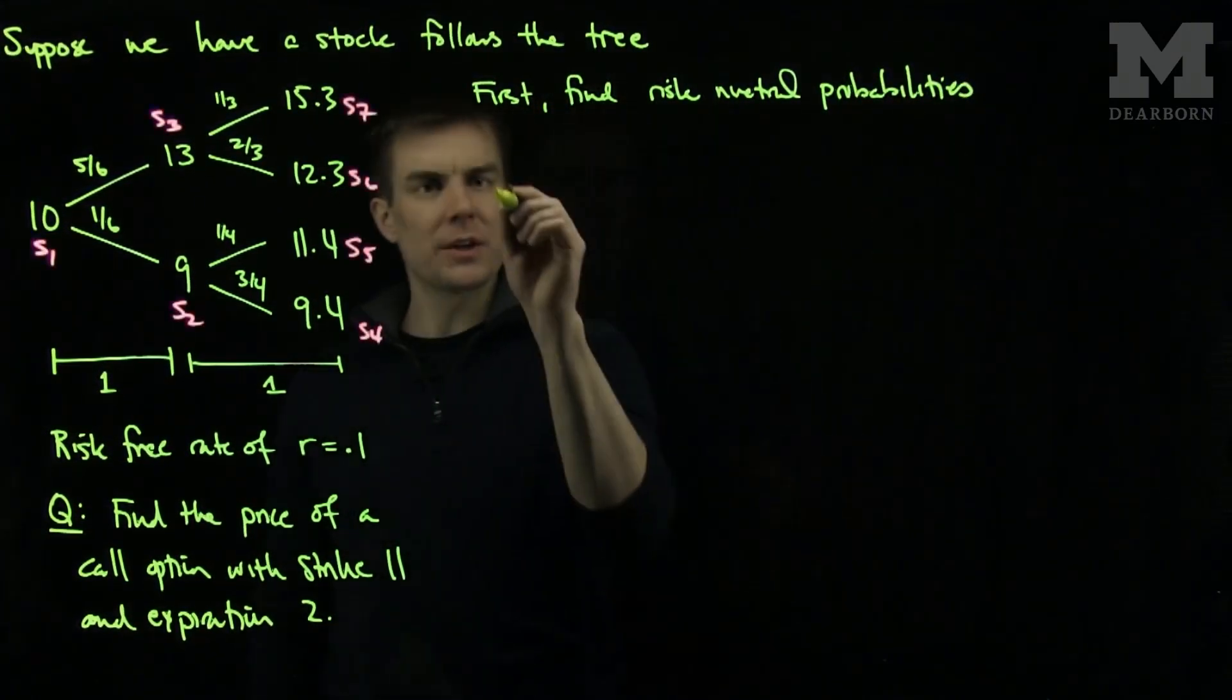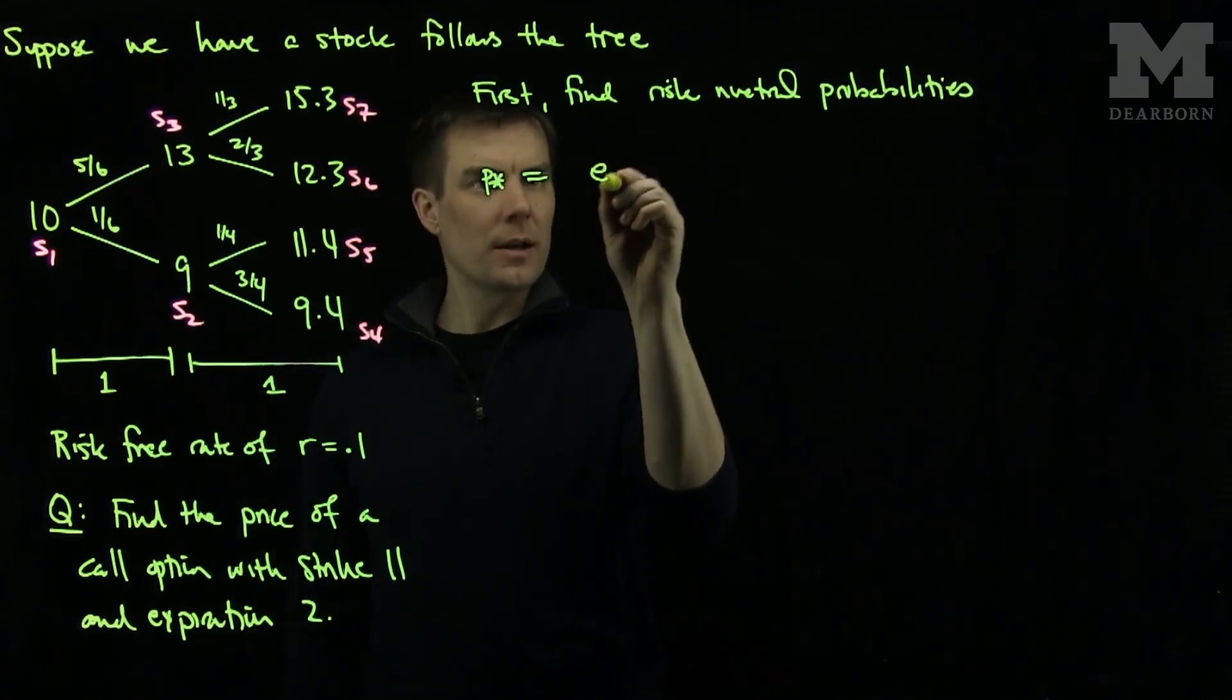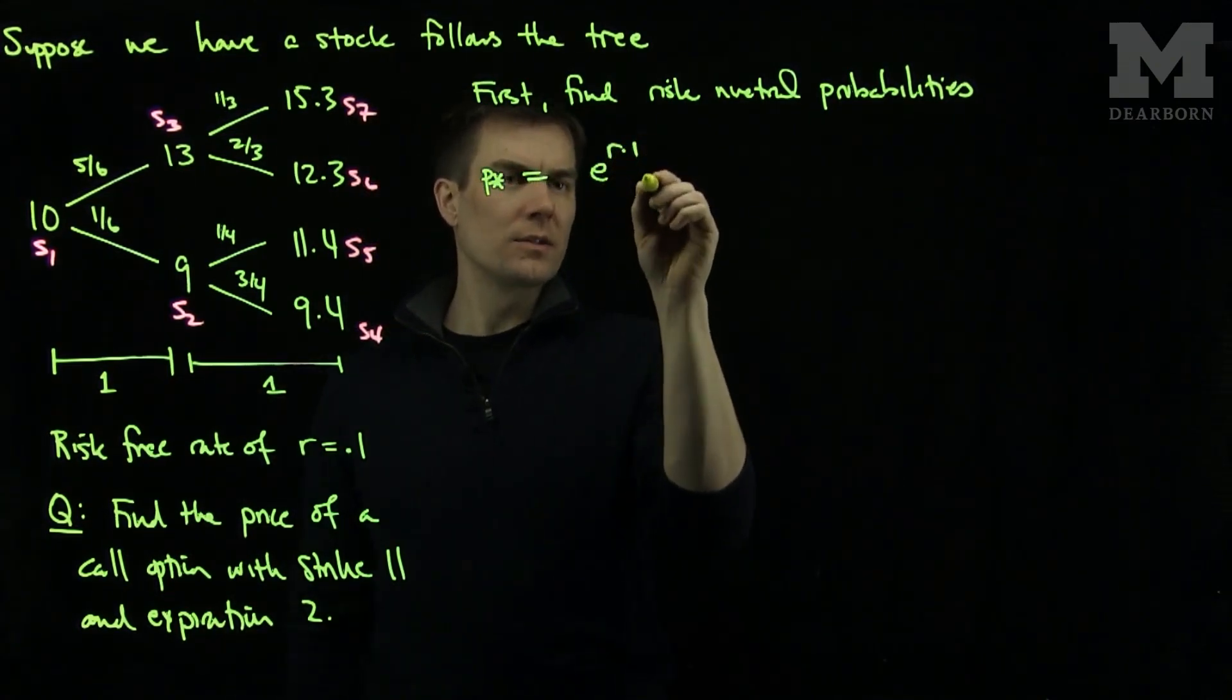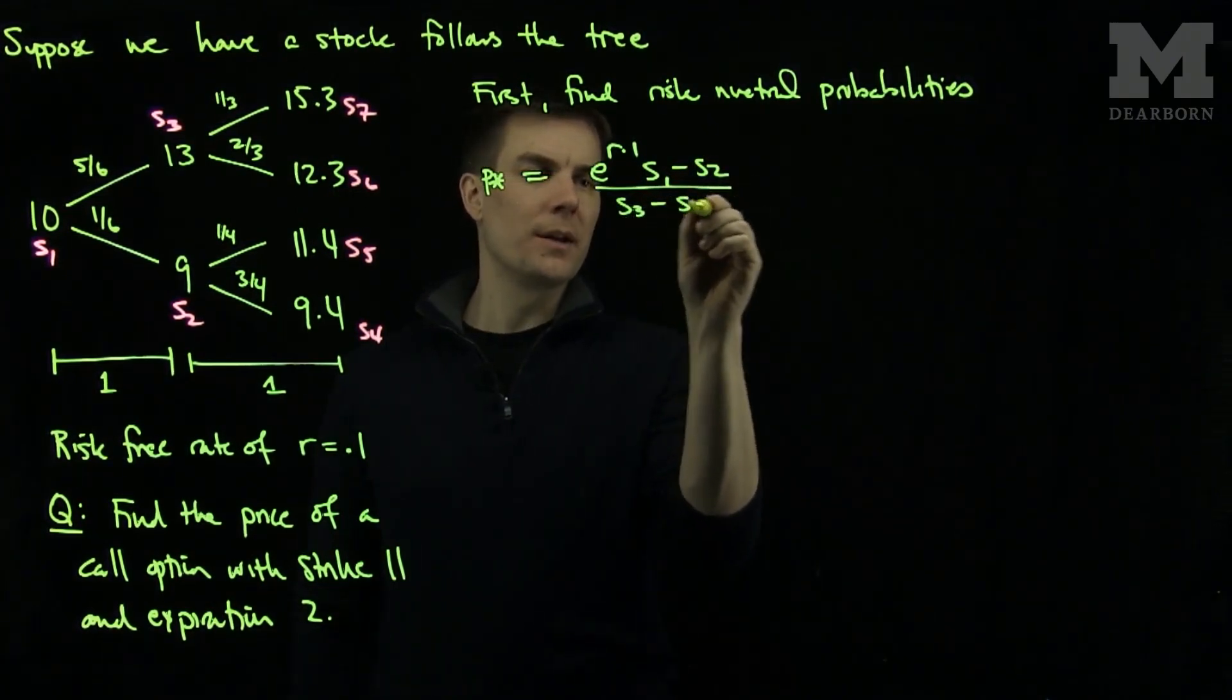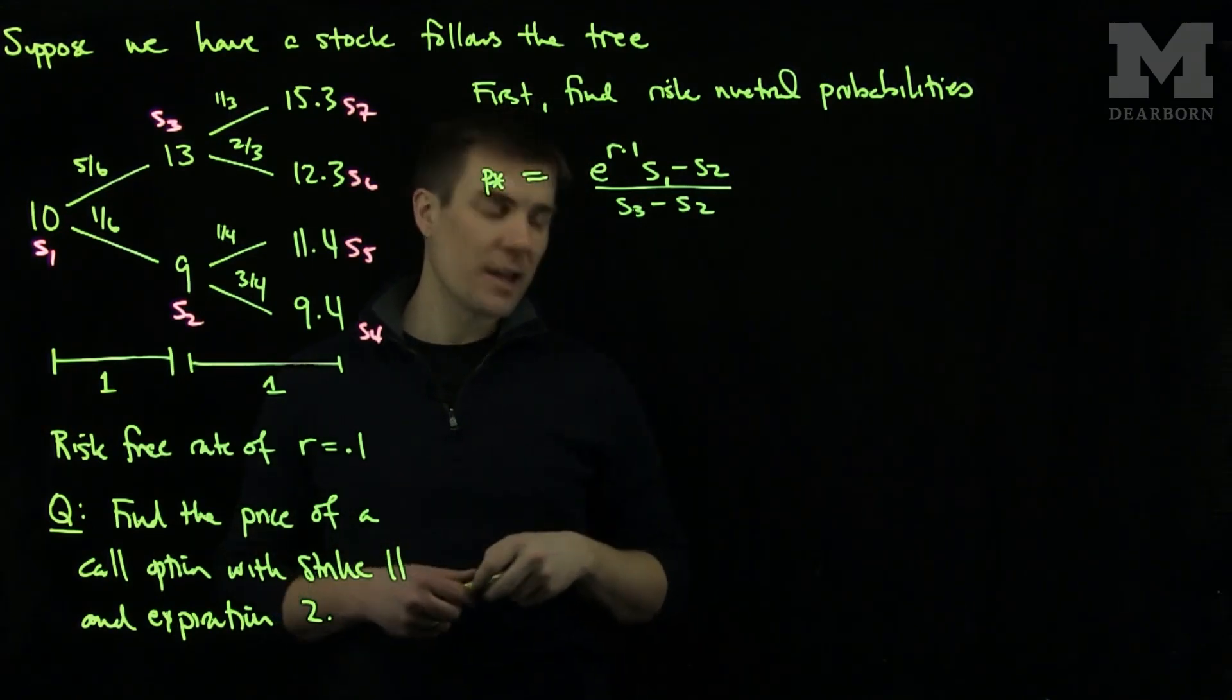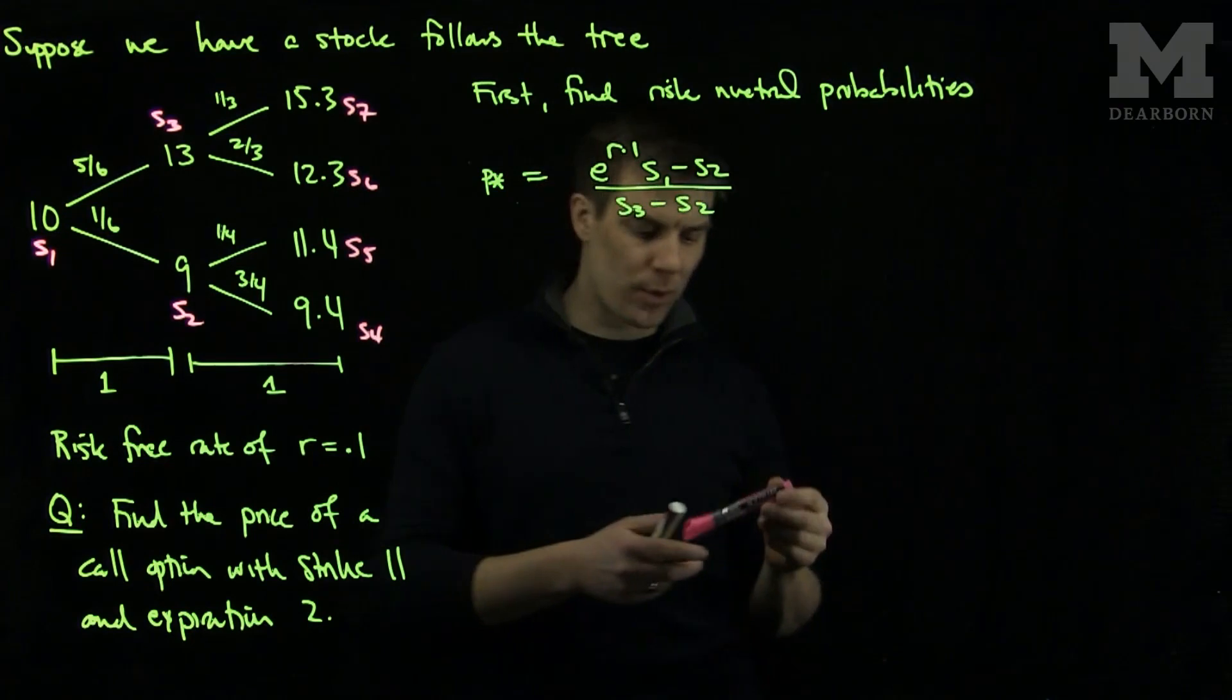P star is ordinarily e to the r times 1 s1 minus s2 over s3 minus s2. But for the simplicity of calculation we will assume that it is not a continuous rate of return. We will also assume it is an annual rate of return.